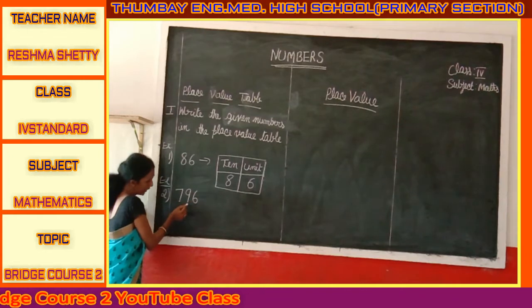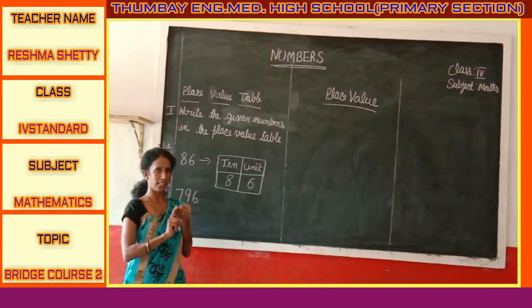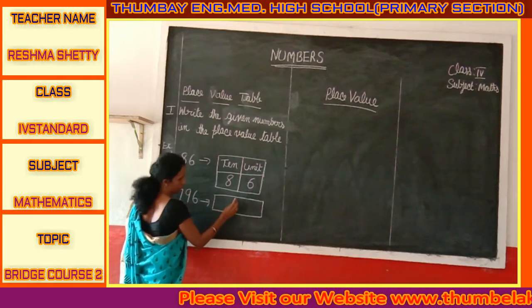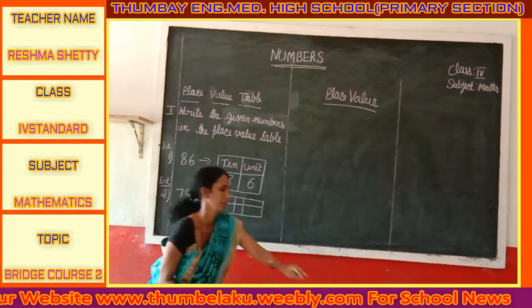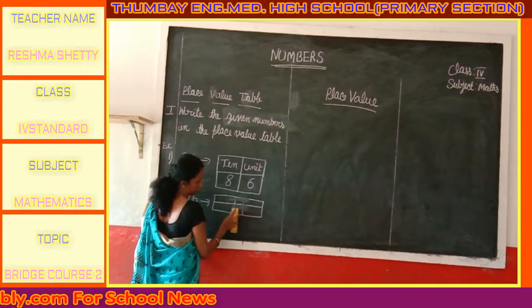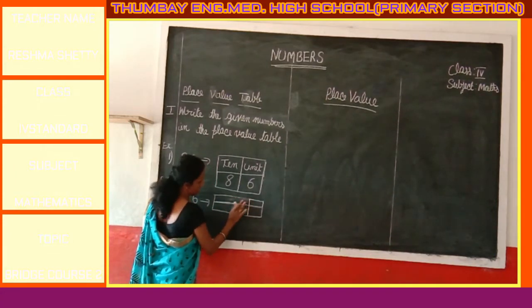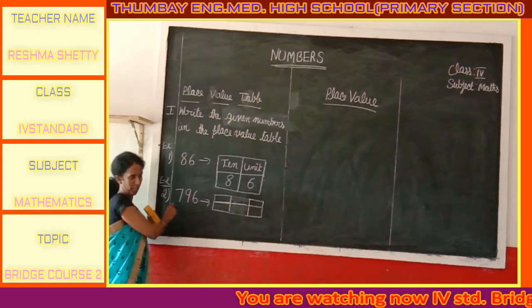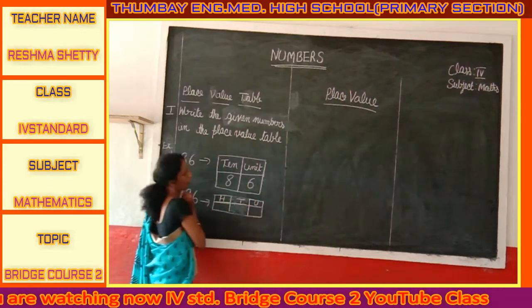So if we have a 3-digit number, we have units, tens, and hundreds. We have a 3-digit number. In the place value table, a 3-digit number consists of 3 places: unit place, tens place, and hundreds place.